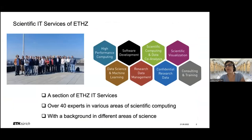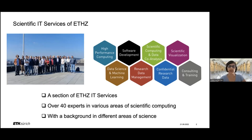First, a few words about who we are. We are the Scientific IT Services of ETH Zurich, a large section of the central IT services. We have over 40 people in our group with different scientific competencies, and most of us have a scientific background. We do different things at ETH — we have four groups in our section.